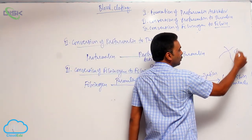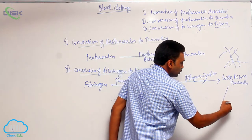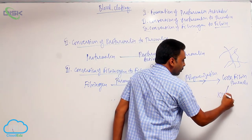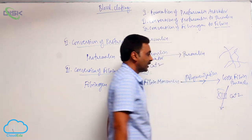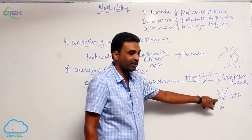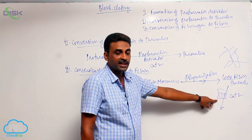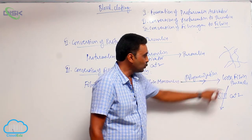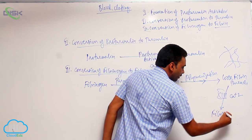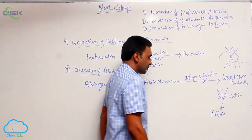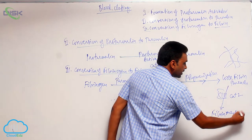The loose fibrin threads are still loosely arranged. Factor 13, known as fibrin stabilizing factor, works on these loose threads in the presence of calcium ions, causing loose threads to become dense fibrin threads — a fibrin mesh work is formed.